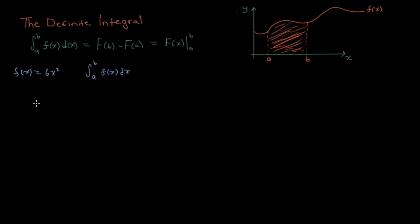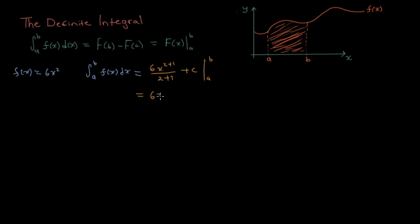That's pretty simple using our reverse power rule from the previous video. The integral would be 6x squared plus 1 divided by 2 plus 1, plus C, from A to B. I'm leaving the plus C there just to show you why it cancels. This simplifies further to 6x cubed over 3, which is 2x cubed, from A to B.